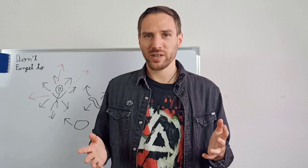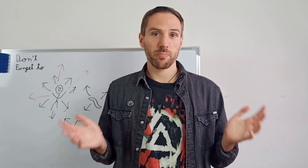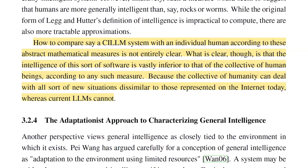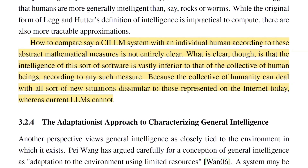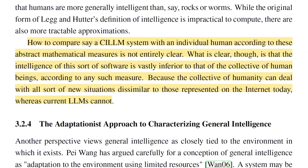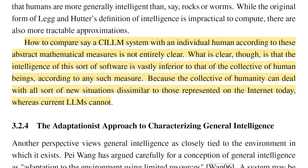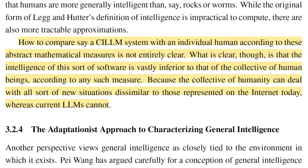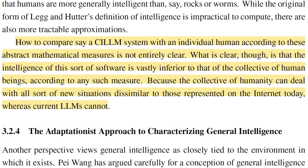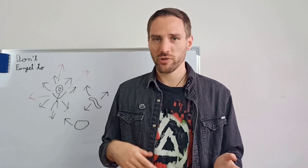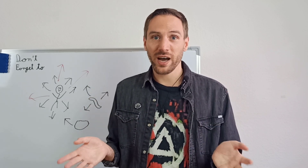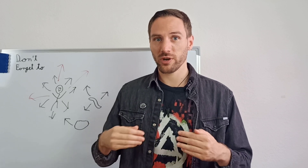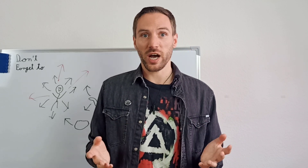How to characterize an LLM in this sort of measurement for intelligence? As the paper puts it, how to compare an LLM system with an individual human according to these abstract mathematical measures is not entirely clear. What is clear is that the intelligence of this software is vastly inferior to that of the collective of human beings according to any such measures, because the collective of humanity can deal with all sorts of new situations dissimilar to those represented on the internet today, whereas current LLMs cannot. So current LLMs would not qualify as AGI.